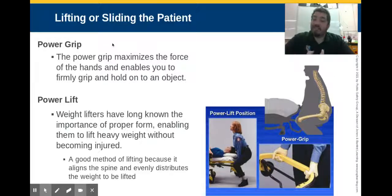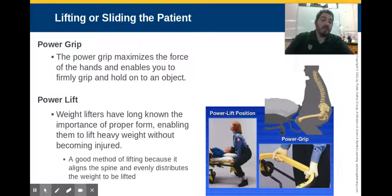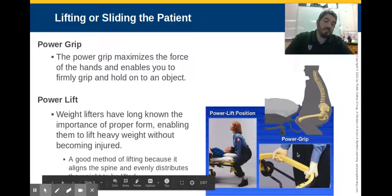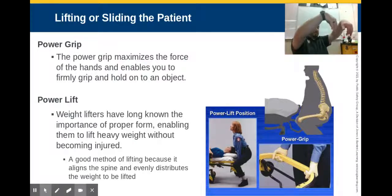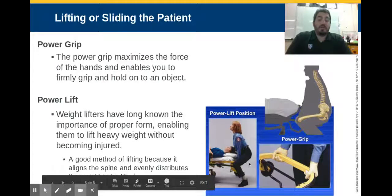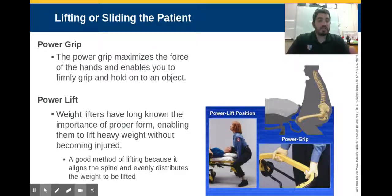To actually lift something, we need to use what's called the power grip — a grip that maximizes the force of your hands and allows you to grab an object firmly. You can see here this demonstration with EMTs grabbing the ambulance stretcher. Her palms are faced out so she's getting the entire surface of her palm around it as well as closing her fingers. If she were to just grab with her fingertips, she'd lose grip. So she's using her whole hand to grab the stretcher, backboard, scoop stretcher, or stair chair firmly.